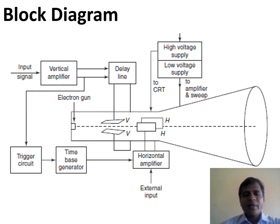The cathode ray tube is nothing but an evacuated glass envelope, which consists of an electron gun at one end. In between, there are vertical and horizontal plates, and at the end of the tube there is a fluorescent screen. We shall discuss in detail about these blocks.